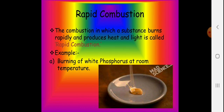Rapid combustion is the combustion in which a substance burns rapidly and produces heat and light. For example, burning of white phosphorus at room temperature. We have already discussed that phosphorus has an ignition temperature of 35 degrees Celsius, which is the room temperature. So that is called rapid combustion.